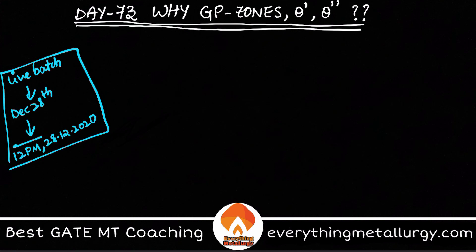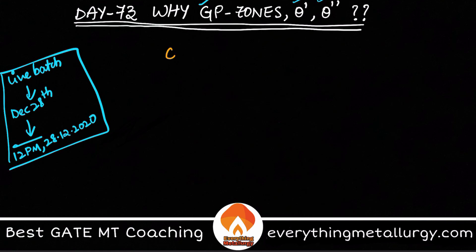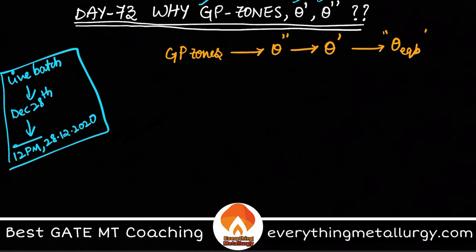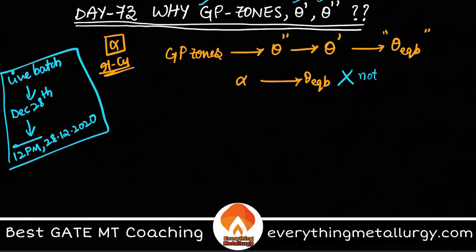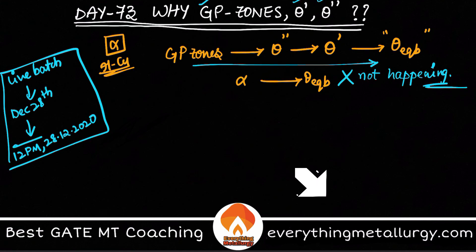Coming to the main topic: why are GP zones and intermediate precipitates like theta double prime and theta prime even forming? We already know the sequence — initially GP zones form, which convert to theta double prime, which then converts to theta prime, and finally you get theta equilibrium, the equilibrium precipitate. So why is alpha not directly converting to theta equilibrium? Why is this sequential transformation actually seen?